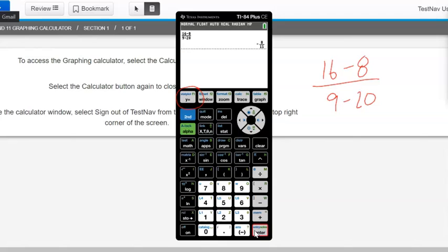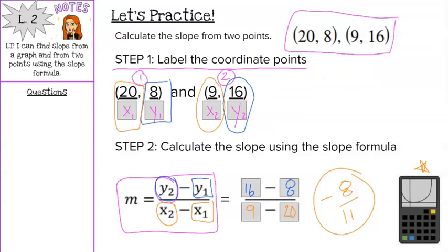And we get our fraction. What's nice about using our calculator is it will reduce it for you. So it's already in that simplified answer, negative 8 over 11. So that is how you find slope using the slope formula.